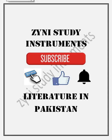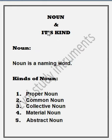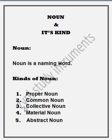Now I'm going to start the topic. Noun and its kinds. First of all, noun — noun is the naming word. Kinds of noun: first, proper noun; second, common noun; third, collective noun; fourth, material noun; and the fifth, abstract noun.